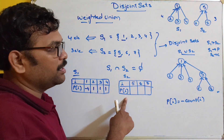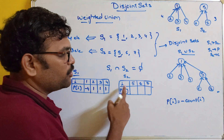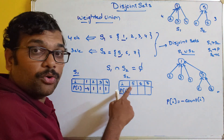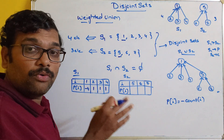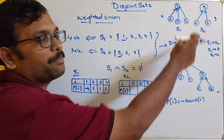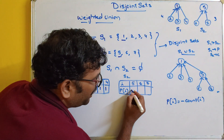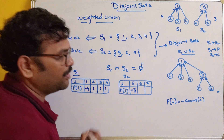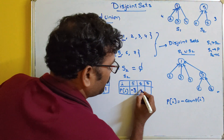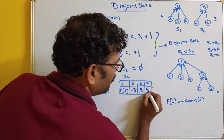For the second set S2, elements i and parent p(i): 5, 6, 7. Element 5 is the root node. We count the number of elements in the set — 3 elements: 5, 6, 7. So parent of 5 will be minus 3. Parent of 6 is 5, parent of 7 is 5.